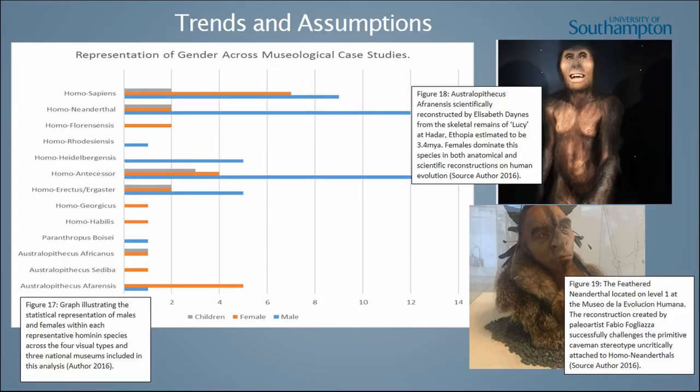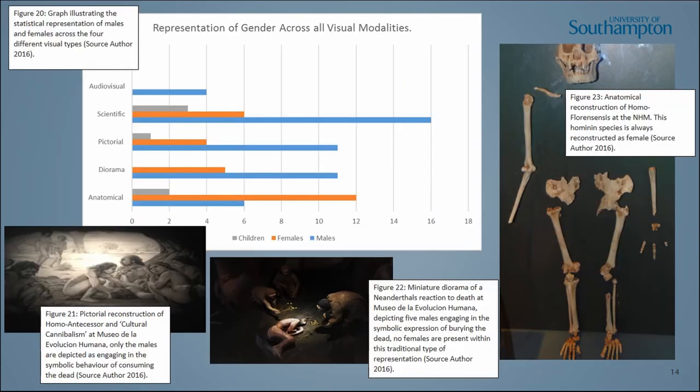As the trends and assumptions demonstrate, females clearly dominate the earlier species while males dominate the later ones. Homo antecessor gives a slightly skewed representation as the Museum of Human Evolution focused specifically on that hominid. The visual trends are straightforward: women are reconstructed anatomically and males are reconstructed scientifically.